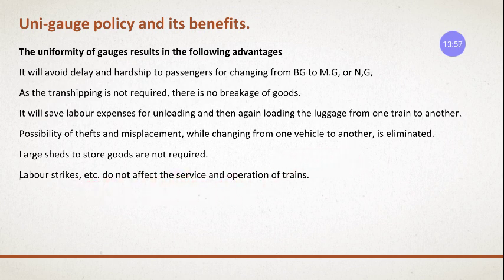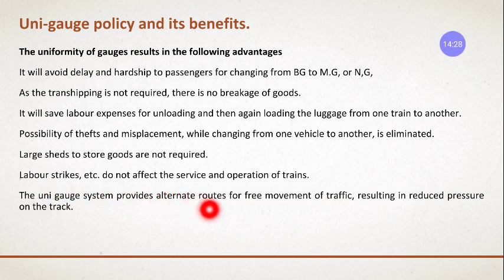In a non-unigage system, if there is a labor strike, no one is available to unload goods, store them in sheds, and reload them onto another train, which stops operations entirely. Under the unigage system, this stoppage does not occur. Additionally, the unigage system provides alternate routes for free movement of traffic, reducing pressure on any single track.